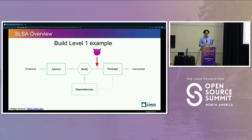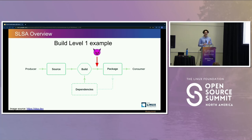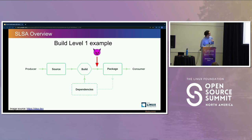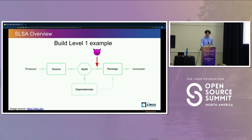Here is my example of a level one build setup. I am writing code on my laptop — it's just me. I'm going to write a shell script that calls GCC, and my laptop and that shell script are my build platform. An attacker could get into my laptop, change the source code, change my build script, swap out my libc, or even mess with the web server where I am hosting the software. In this example, the attacker is able to swap the provenance and the package, and nobody can detect that change because it hasn't been signed or verified in any way. It is just documentation of intent.